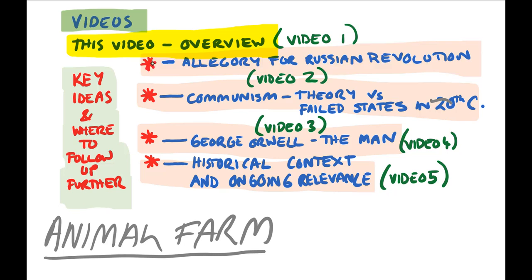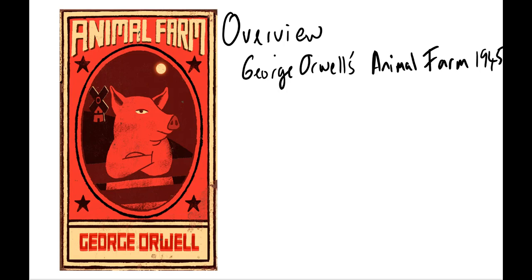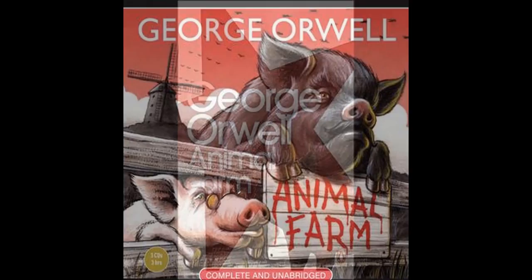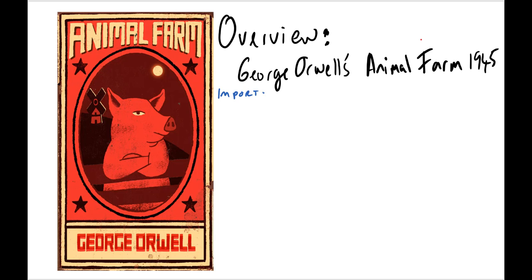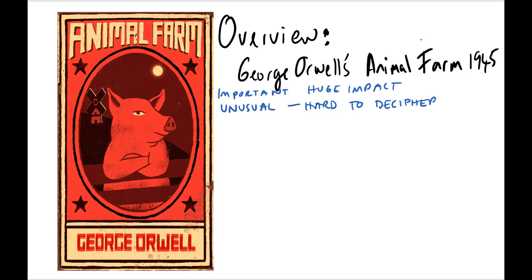This video is an overview of the five videos I've made in total, introducing George Orwell's 1945 novel Animal Farm. It's a really important novel and has had a tremendous impact in the 20th century, but it is also highly unusual. The world has changed considerably since the novel was written and several key parts of history are not as familiar to people these days, so they need some explanation.